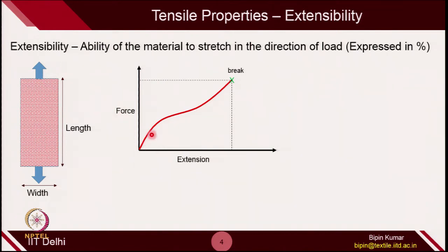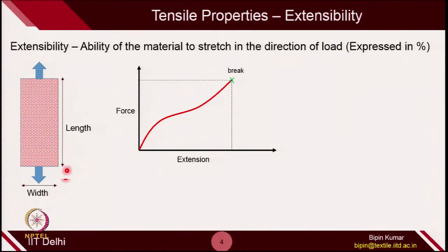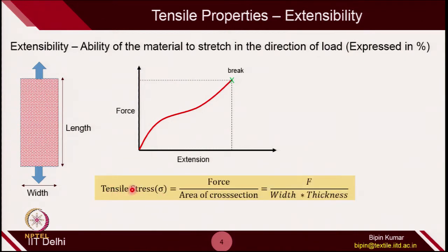When you apply more and more force, you expect more extension, and eventually the material will break. If you see the terms: extensibility in a crude way is the material's ability to stretch in the direction of load — it is the material's ability to extend in the direction of force. The area of cross-section for a fabric specimen is width times thickness. Strain is defined as the change in length per unit original length: L-final minus L-initial divided by L-initial gives the amount of deformation, and this ratio is the strain.